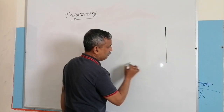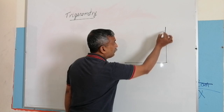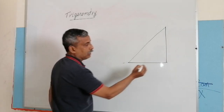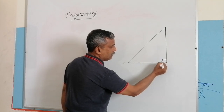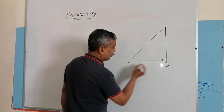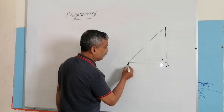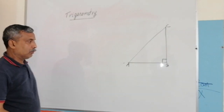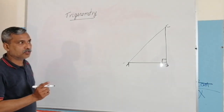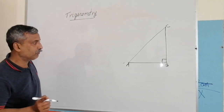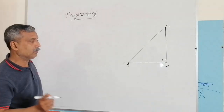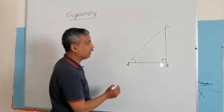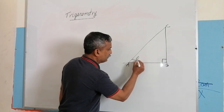Let me draw a triangle here. This triangle is right-angled at B and the name of the triangle is ABC. We are going to define trigonometric ratios of an angle. Let me take an angle named theta.